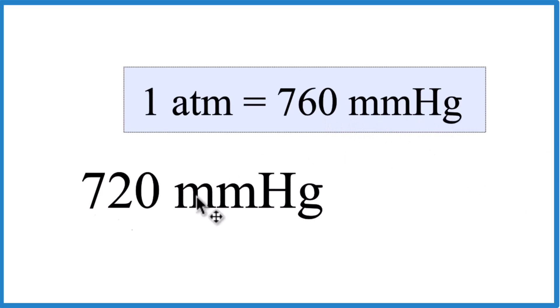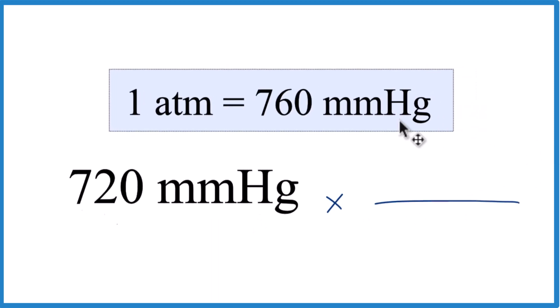So we'll multiply our 720 here times our conversion factor. One atmosphere is 760 millimeters of mercury. We're going to put that 760 millimeters of mercury on the bottom so these cancel out. And we're going to put our atmosphere on the top. That's what we'll end up with.